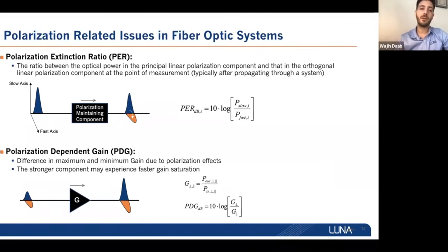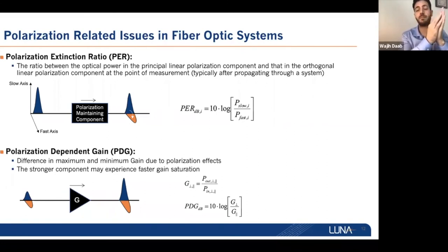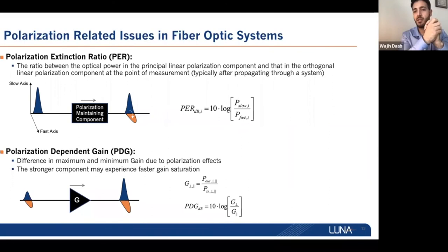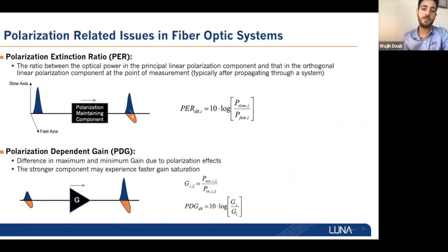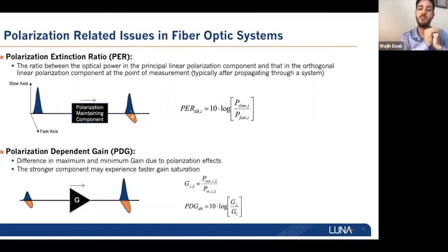Polarization extinction ratio (PER) is the ratio between the power on the desired principal state of polarization to the other orthogonal principal state. In many applications, polarization-maintaining fiber is used to keep linear polarized light throughout the system, but because of fiber imperfections, some power leaks to the orthogonal state — that ratio is the PER. Polarization-dependent gain (PDG) is when the gain of an amplifier is polarization sensitive, and the ratio between maximum and minimum gain is the PDG. All of these parameters are very important to understand, manage, and measure.